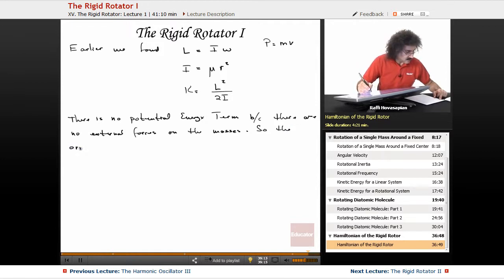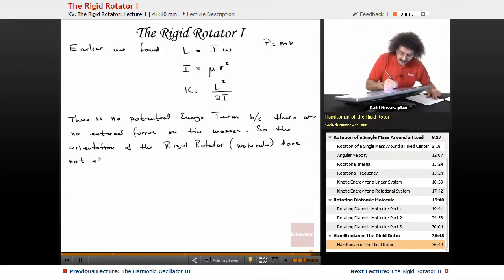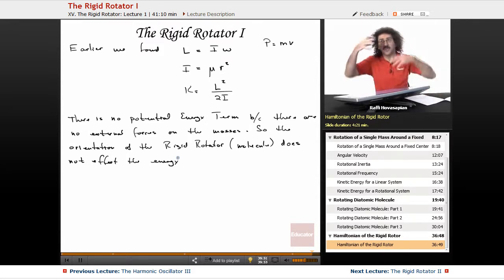So the orientation of the rigid rotator—and when we say rigid rotator, we're just talking about the thing that's actually turning, the diatomic molecule, whatever it is we happen to be discussing—the orientation of the rigid rotator does not affect the energy. Because there is no external force, it doesn't matter how it's rotating. It doesn't change the energy of the rotating system.